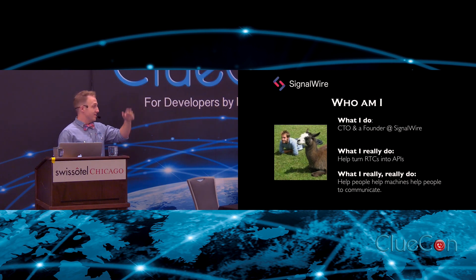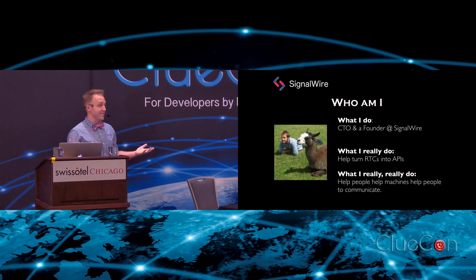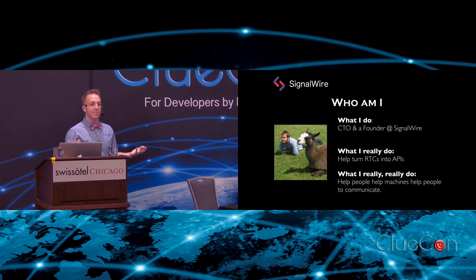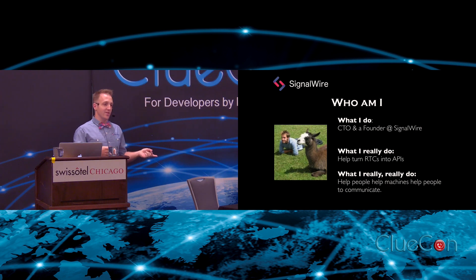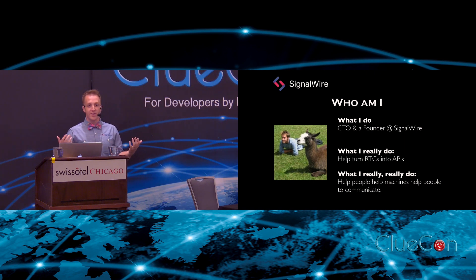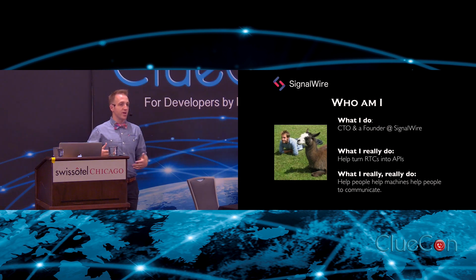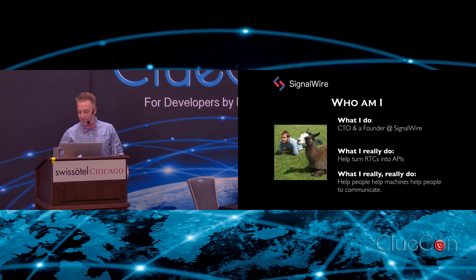I'm a CTO and a founder at SignalWire. What do I really do? I turn real-time communications into APIs. That's really what SignalWire is all about — API-izing all the stuff that FreeSwitch can do. As a CTO, my job is to help people, to help the machines, to help people communicate with each other. All we're really working on with FreeSwitch is the idea that things can communicate to each other. I find it to be a very person and people-oriented business, trying to help clients and consumers, making this a very simple-to-consume company and an exciting place to be.